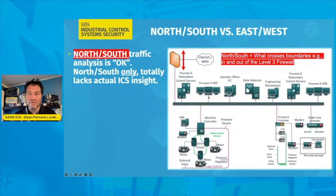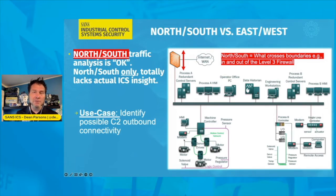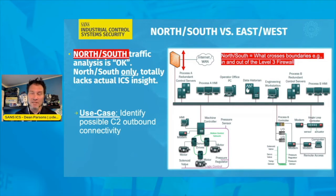North-south in this case refers to a firewall that allows you to monitor the points of entry and exit where data is going outside of your level three firewall or coming in. This is data crossing your boundaries or enforcement zones at the level three in the Purdue model. The best use case here for north-south is identifying possible adversary C2 command and control outbound connectivity. Remote access can also be seen in this case depending on the architecture.